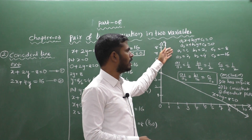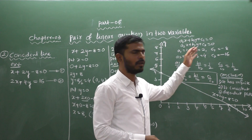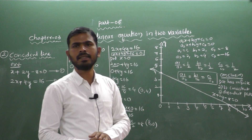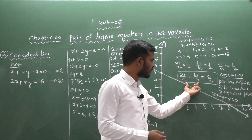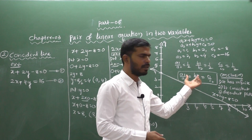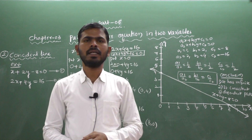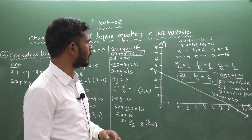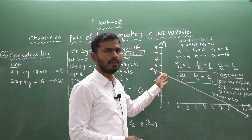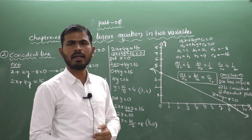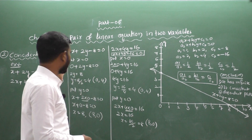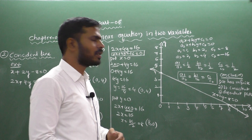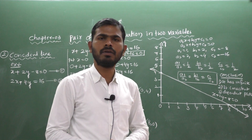So this is how to identify the coincident line without drawing any graph: just compare the ratios a1/a2, b1/b2, and c1/c2. If all three are equal, it is a coincident line. Next class we will discuss how to identify and draw a parallel line and its condition. Please pause the video and write down your notes. Thank you.